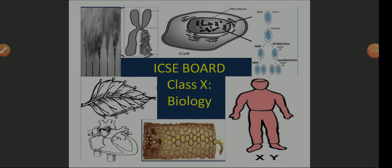Hello viewers, welcome to another episode of ICSC Board Class 10 Biology, episode number 1.2. In the previous episode, we have already studied about the units, the outline of the subject and the paper style, and we have also seen the marks allocated to the specific units. But in this session, we are going to study about the chapter from Unit 1: Introduction to Cell.